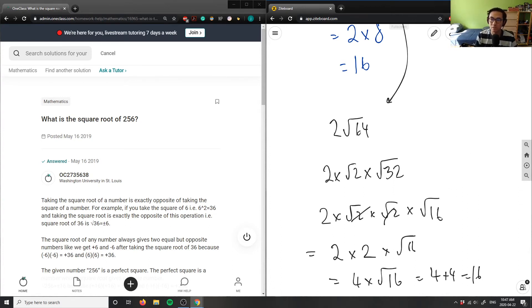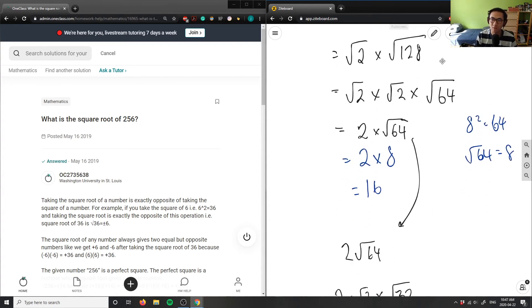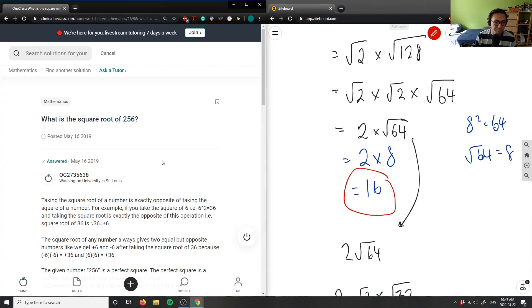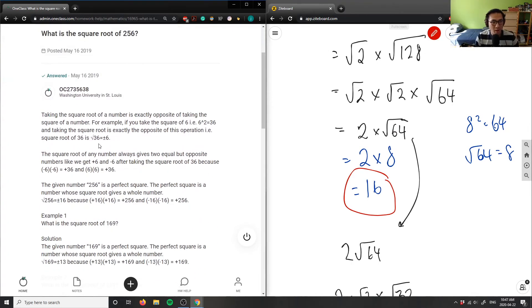So again, the square root of 256 is simply just 16. It's a perfect square which is very nice to us. So how did they solve this? Taking the square root of the number is exactly the...